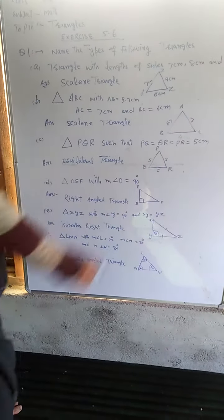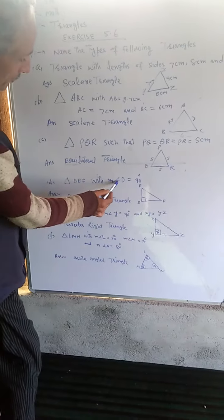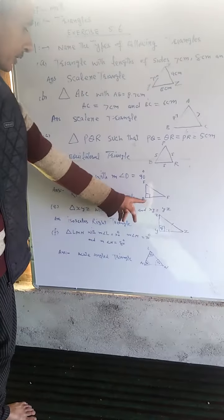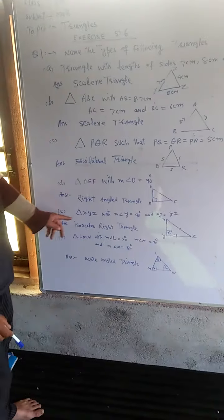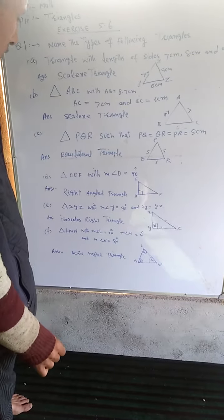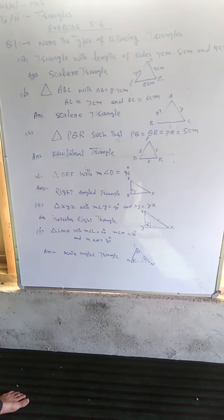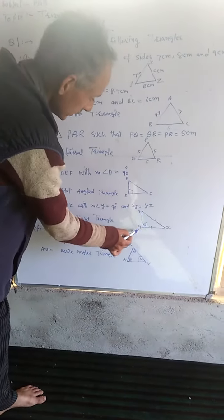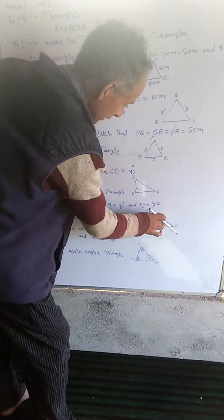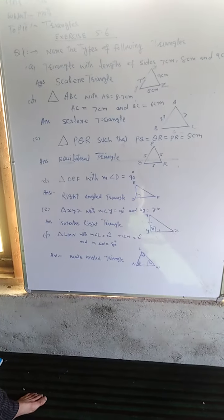Triangle DEF with angle D equal to 90 degrees. Triangle XYZ with angle Y equal to 90 degrees and XY equal to YZ. Since the angle is 90 degrees and the two sides XY and YZ are equal, this is a right triangle.